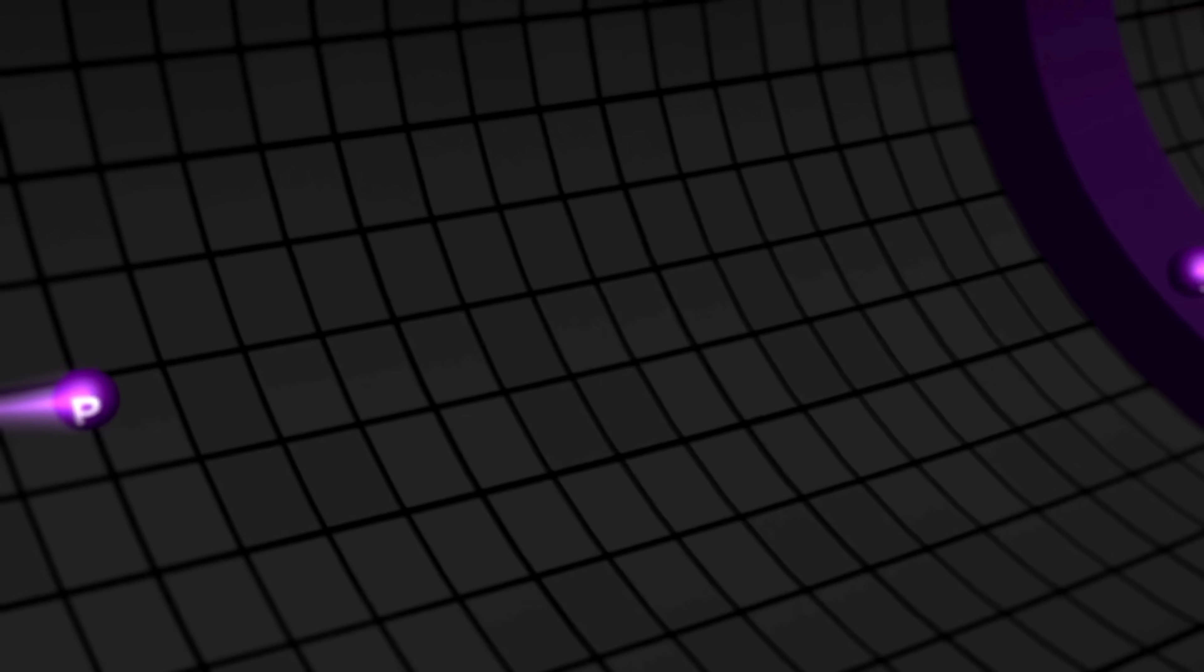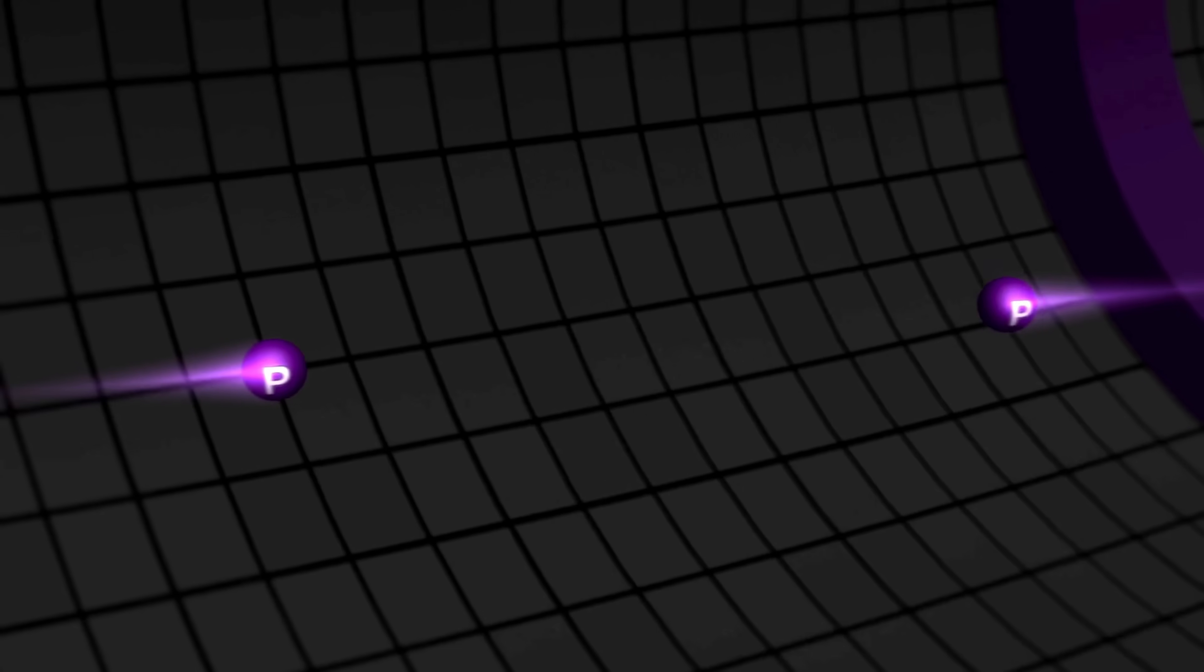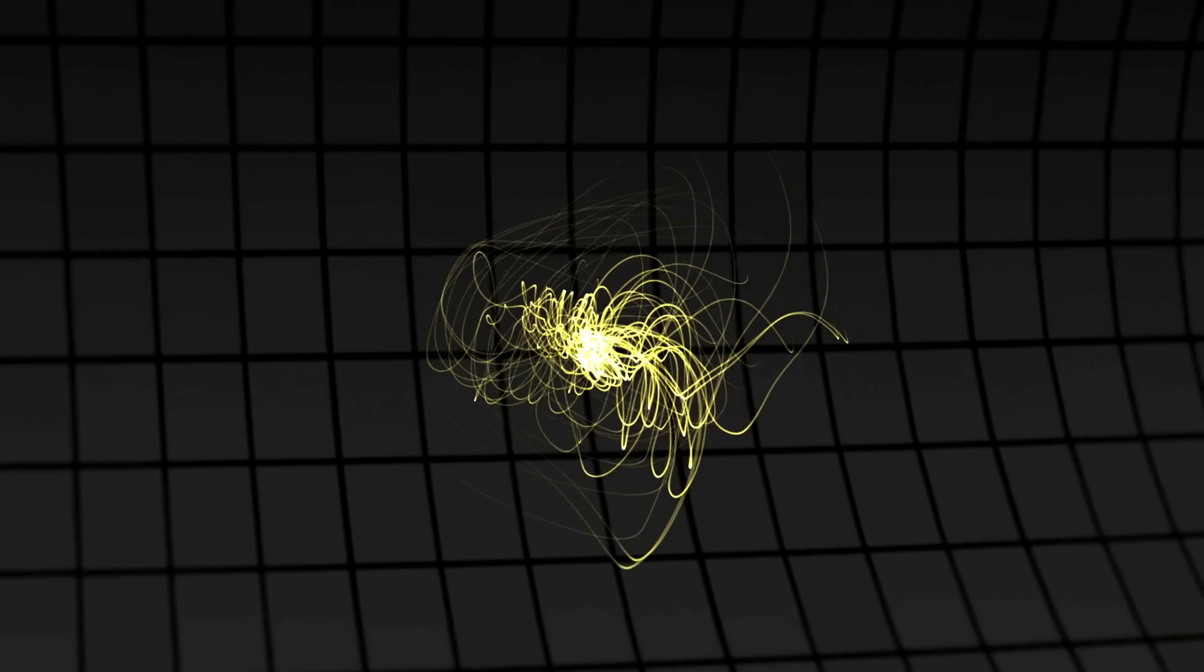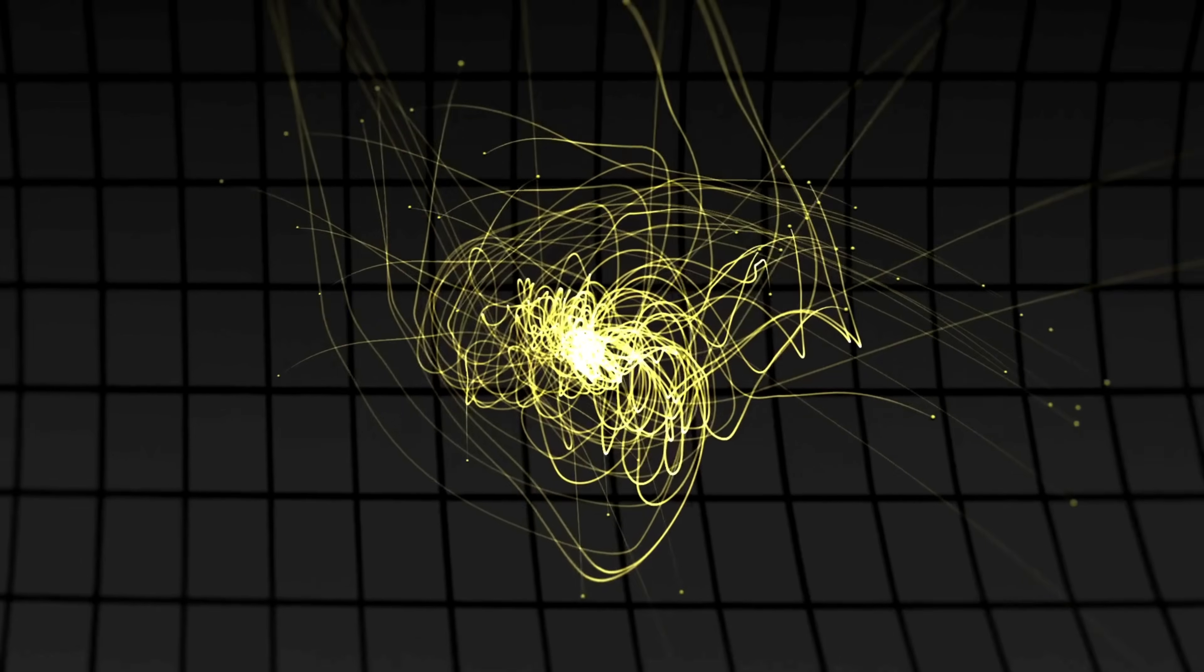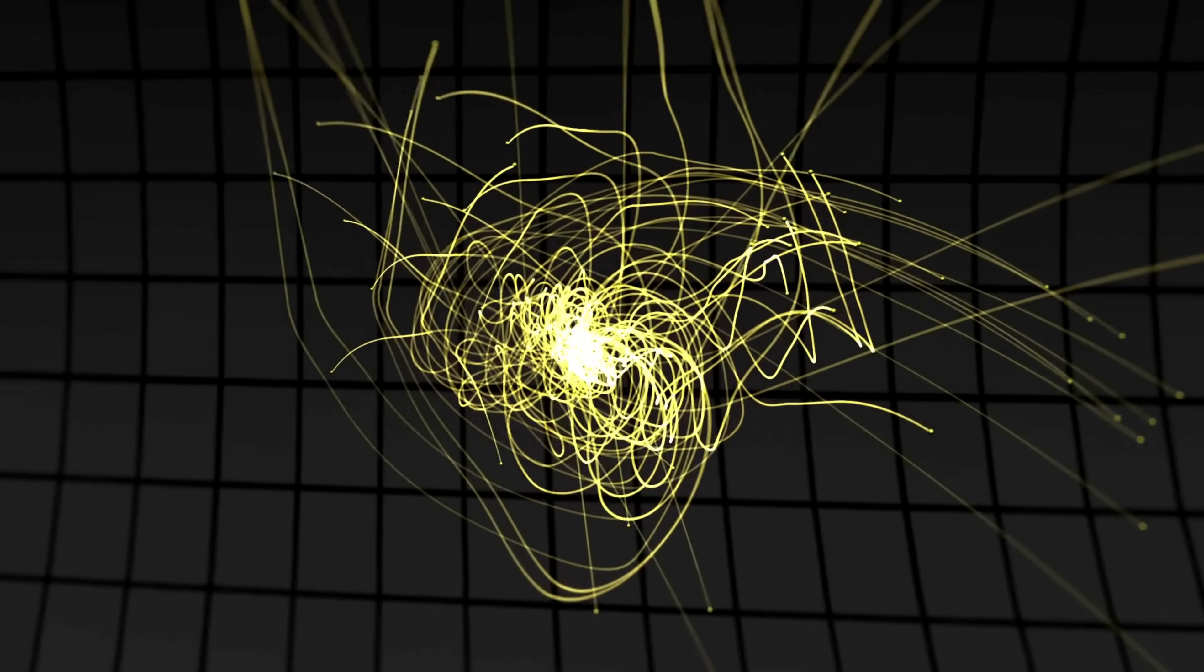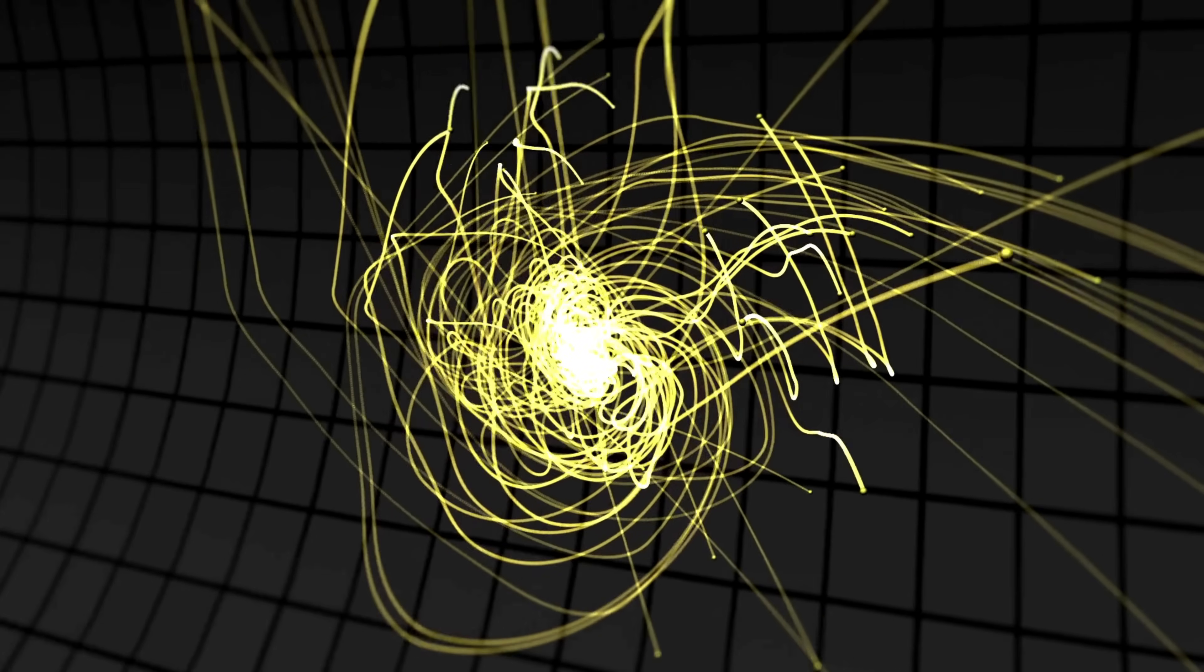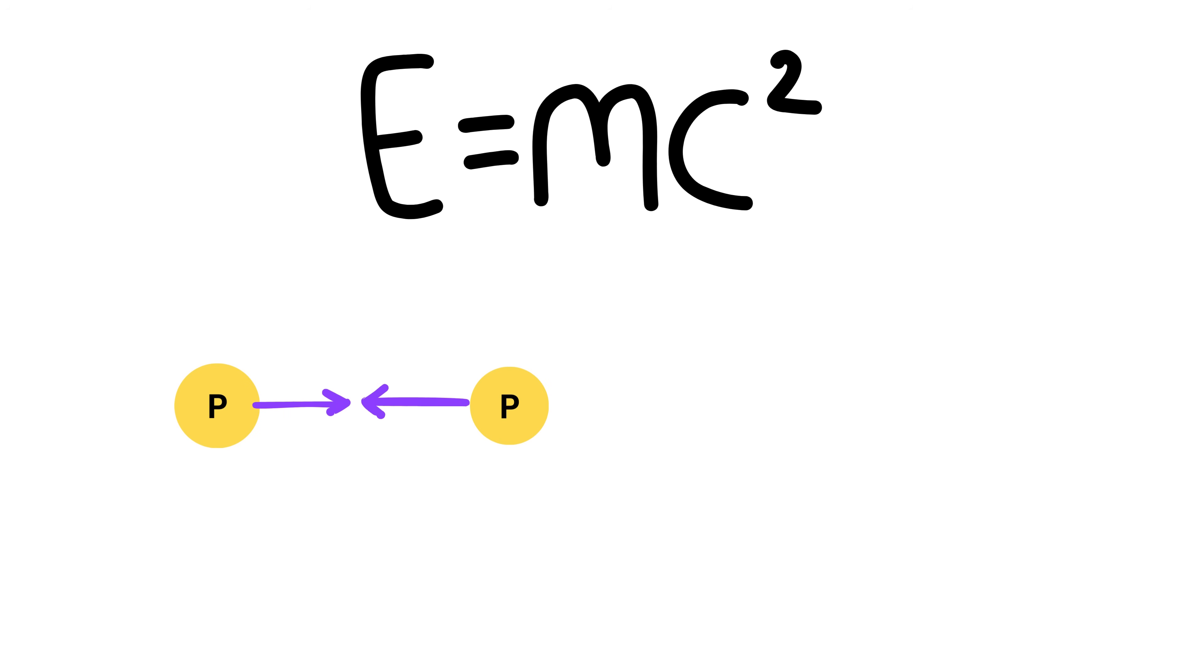As these particles move faster, they gain tremendous amounts of energy. When these high energy particles are smashed into each other, the energy from the collision doesn't just disappear. It transforms that energy can actually create new particles that have real measurable mass, like two high energy photons that can collide and create an electron and a positron.